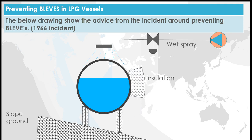Insulation can considerably reduce the heat load into your vessel. The standards go through different levels of insulation by how much you can reduce the heat input, and it's significant. One thing noted in the Feyzin case study was that although the supports for the vessel were fireproofed, they weren't fireproofed to the same degree as the tank — and you can see there were a number of toppled tanks due to that.